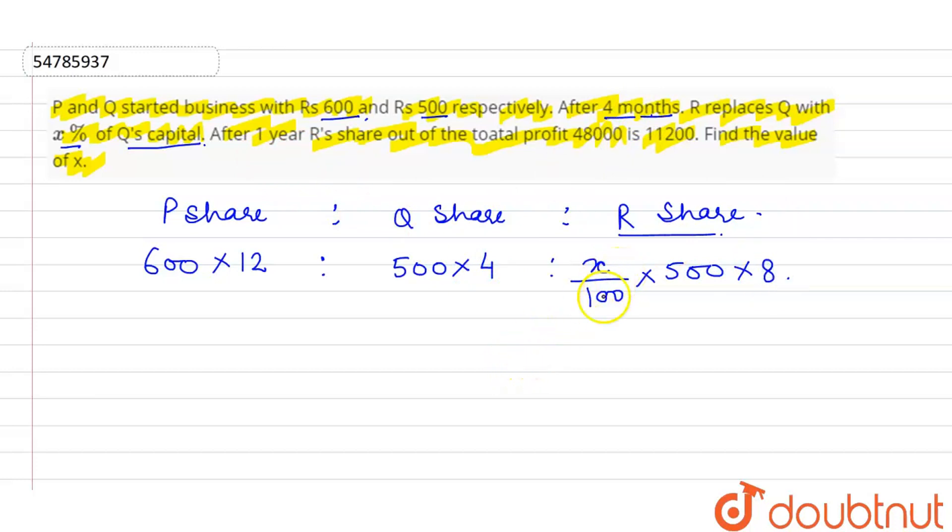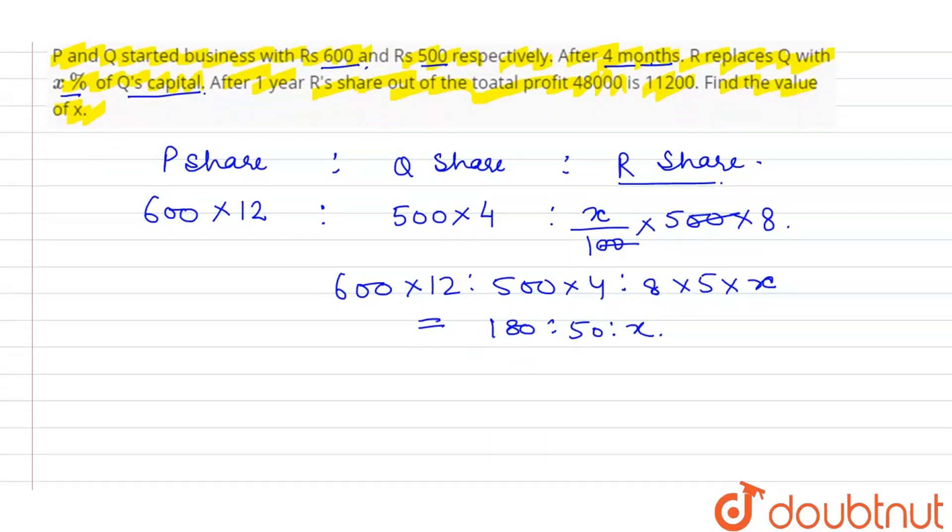12 minus 4 is 8. So this will be 600 into 12, 500 into 4 ratio, 8 into 5 into X. This will be 180, 50, X.